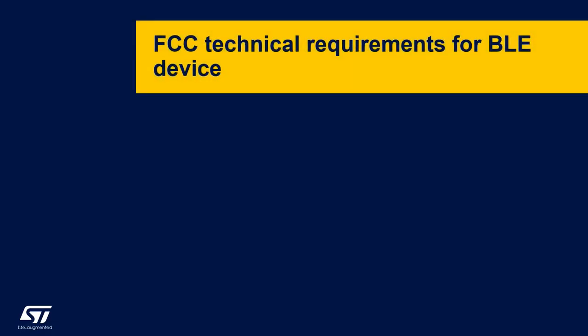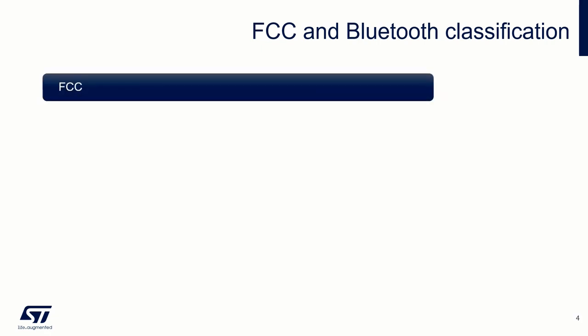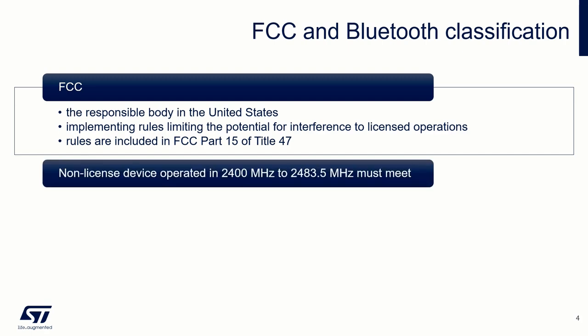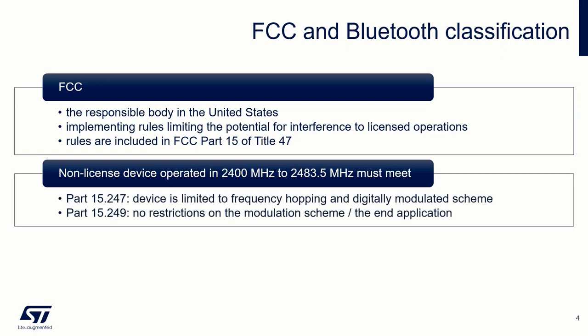Now I will introduce you to the basic requirements set by the FCC for the evaluation of equipment transmitting in BLE technology. The FCC is the responsible body in the United States for implementing rules limiting the potential for interference to licensed operations by low power non-licensed transmitters. These rules are included in FCC Part 15 of Title 47. The non-licensed device operated in band 2400 MHz to 2483.5 MHz must meet some of the following sub-parts of the regulation. It is Part 15.247.